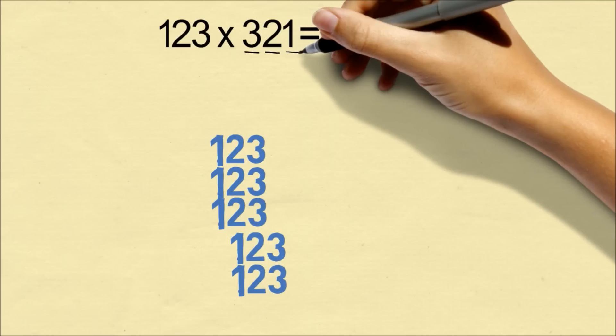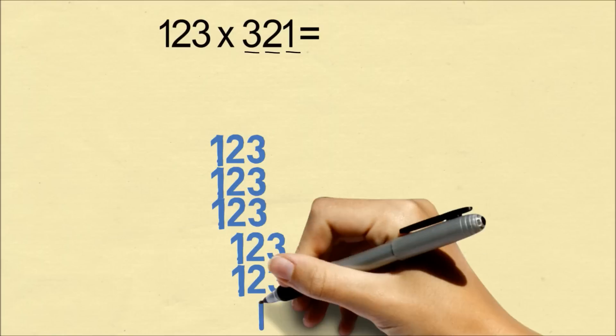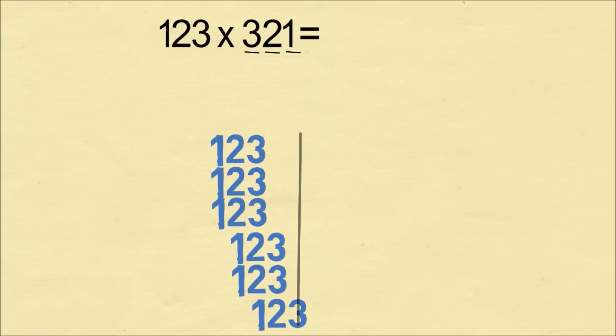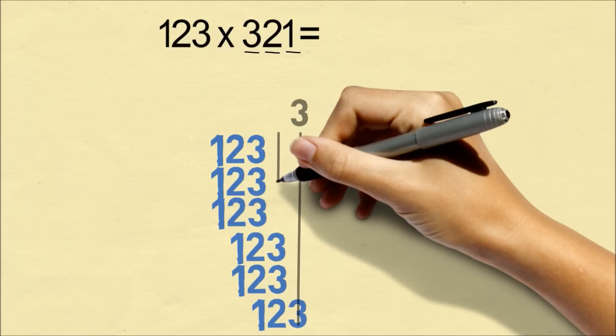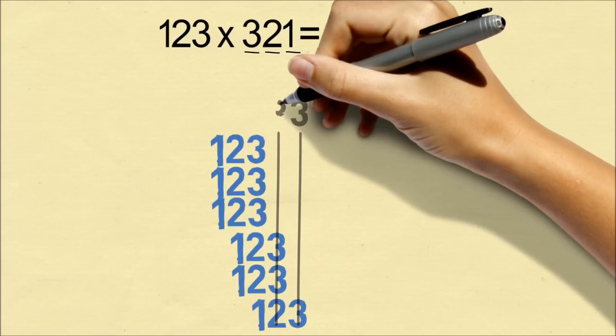And finally, we have the last digit, which is 1, so we shift over one more spot, and we write 123 one more time. On the column on the far right, we just have a 3, so we're going to write a 3. In the next column, we have 3 plus 3 plus 2, which is 8. So in this column, we're going to write an 8.